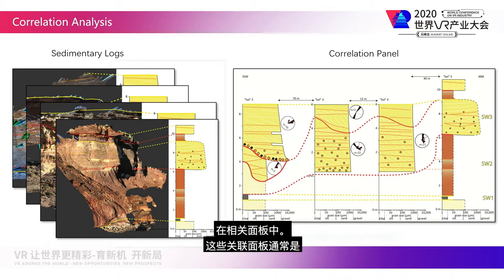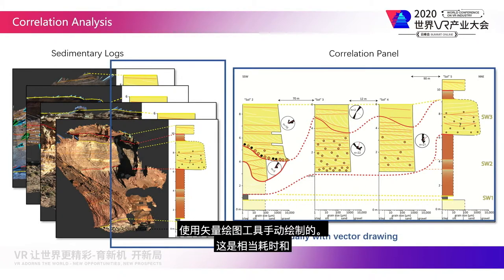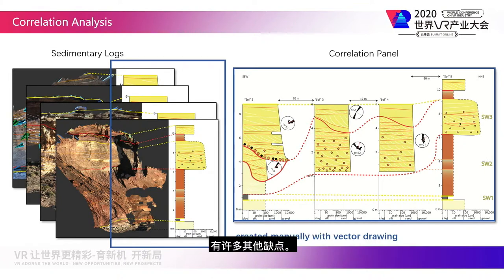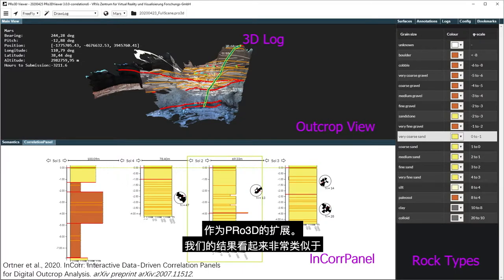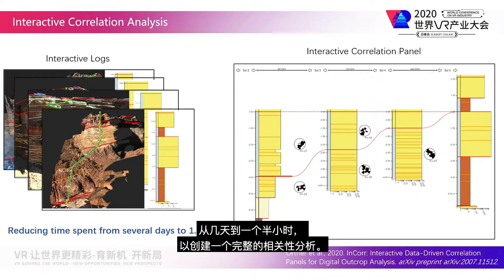These correlation panels are typically manually drawn with vector drawing tools, which is quite time-consuming and has many other drawbacks. Therefore, together with our collaborators from Imperial College London, we developed INCORE — an interactive correlation panel as an extension to Pro3D. Our results look very similar to the manually drawn results, and we could reduce the time spent in this specific use case from several days to one and a half hours.